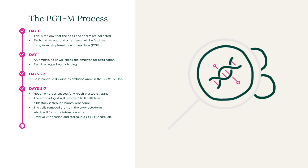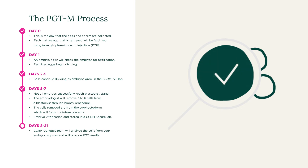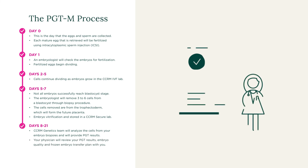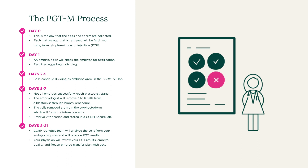While you wait for your results, your embryos are frozen and stored in the lab. CCRM uses a freezing process called vitrification, which is the most advanced freezing process available, with an embryo survival rate of greater than 98 percent. Embryos identified to be free of the single gene mutations are selected for transfer to the uterus during an IVF cycle.